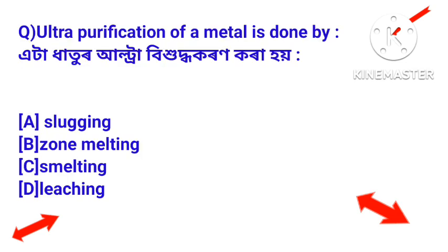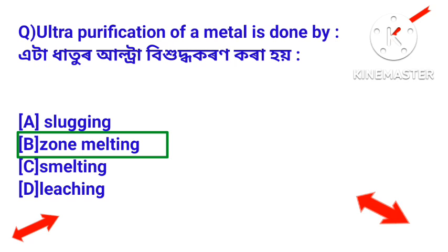Question: Ultra purification of a metal is done by which process? The ultra purification of a metal is done by zone melting — through zone melting, the ultra purification of metals can be achieved.